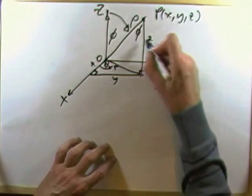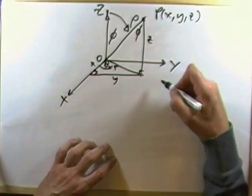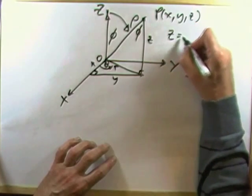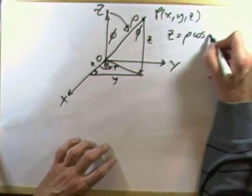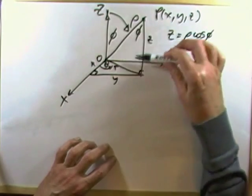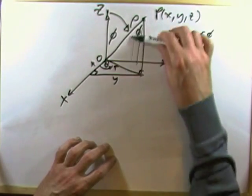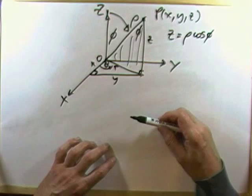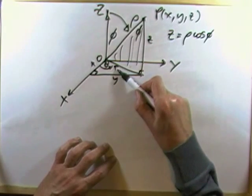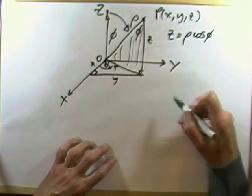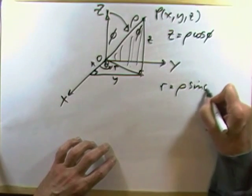And then I get my first coordinate, because all around this corner forms a cosine. So straight away, z is going to be rho cos phi. Now, the next connection, still using this triangle here, this vertical triangle, is that r and rho make the sine. So I've got r equals rho sine phi.